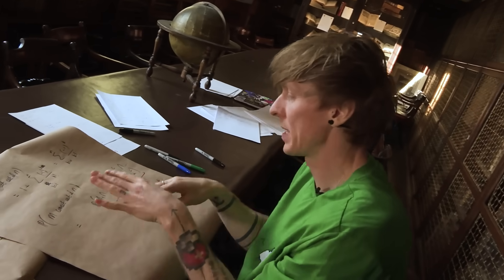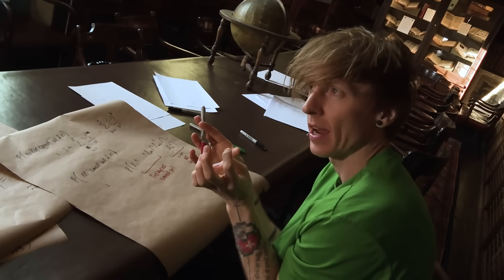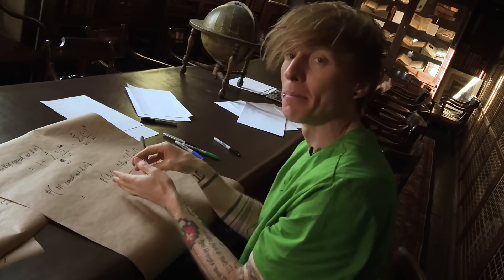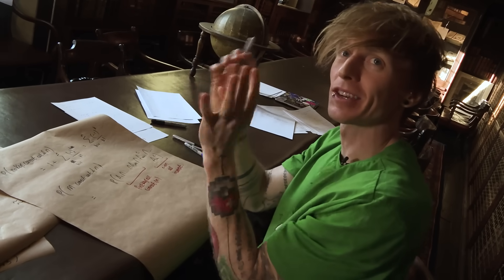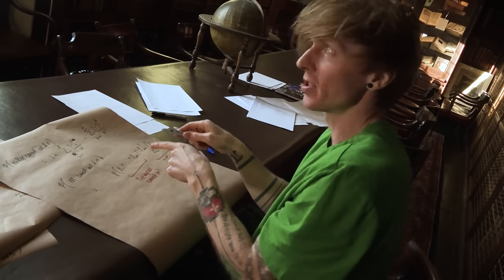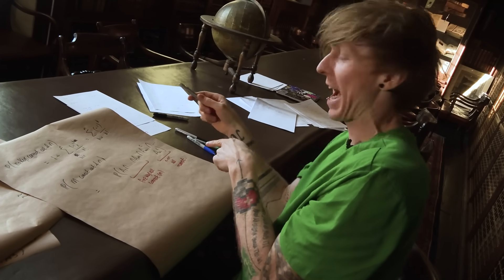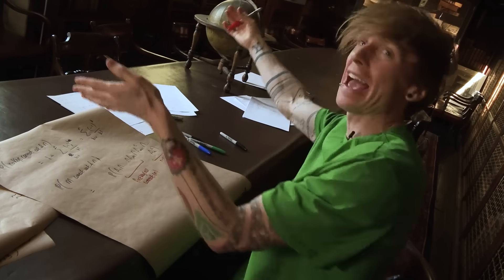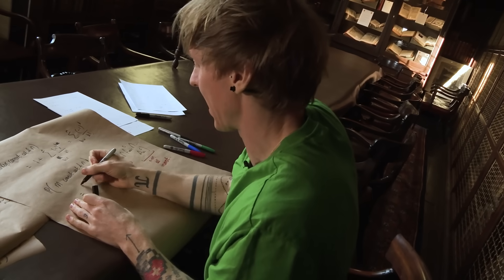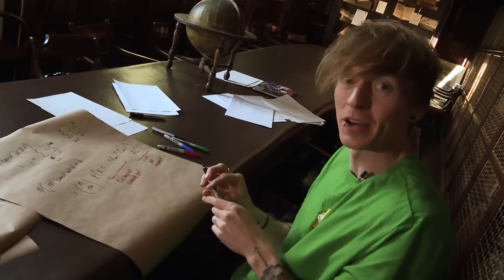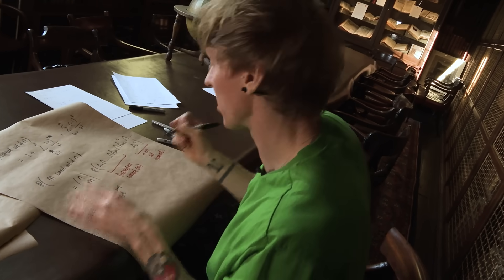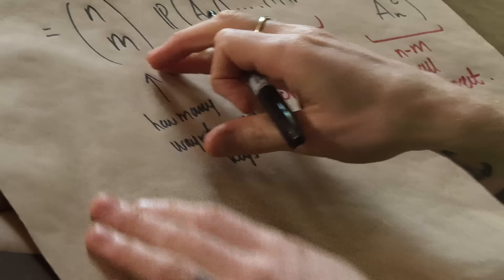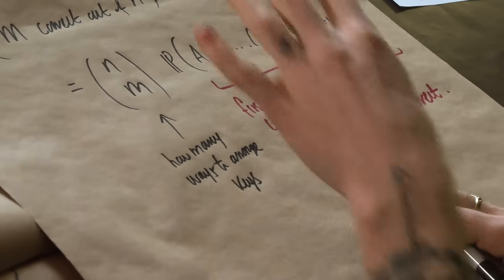We don't have to have the first chunk be correct — we can actually change the order. We just need some number m, which could be 2, out of the total n, to be correct. So we can swap and rearrange these. This is just a classic counting problem: how many ways can you pick m keys out of n? It's the definition of a combinatorics problem. The number of ways to do that is n choose m — your binomial coefficient. So this is just: how many ways to arrange the keys such that exactly m are correct and the rest aren't?